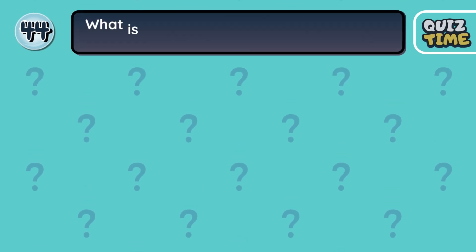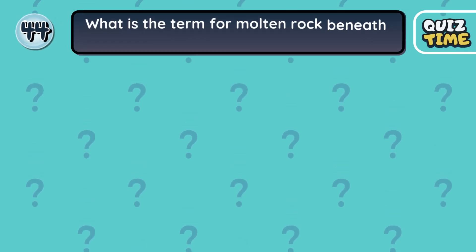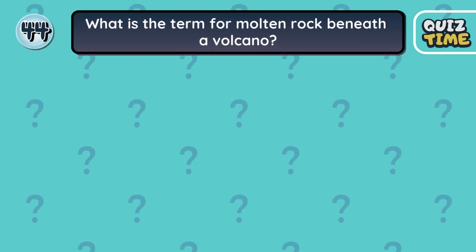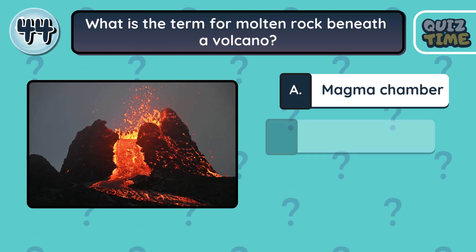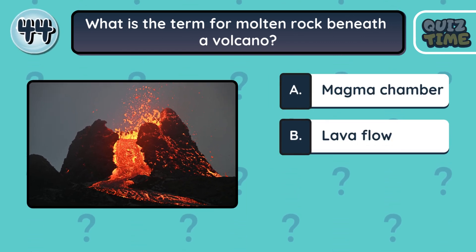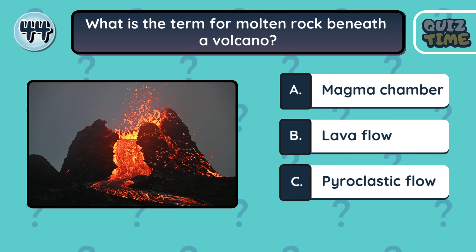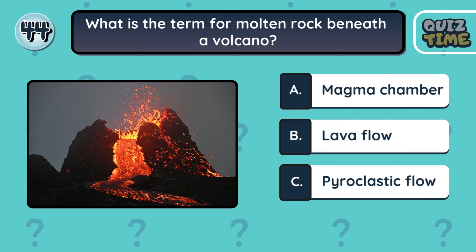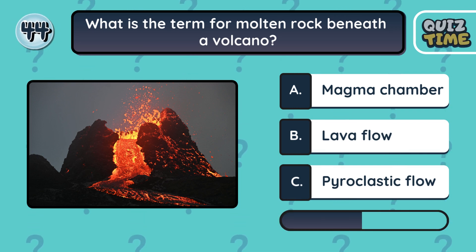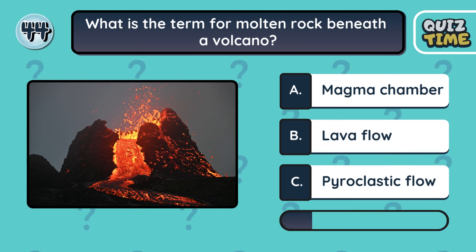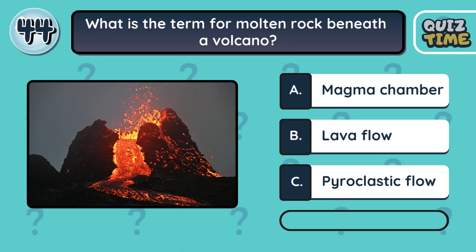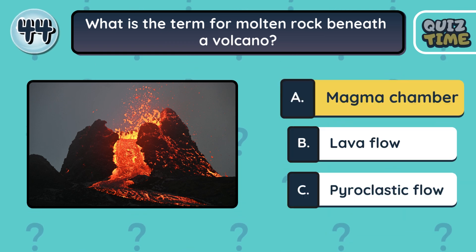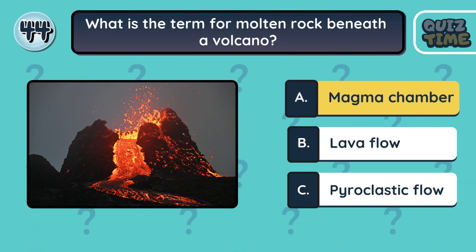Number 44. What is the term for molten rock beneath a volcano? A. Magma chamber. B. Lava flow. C. Pyroclastic flow. The correct answer is A. Magma chamber.